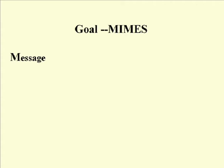The next thing to think about, the I, is intent. What is your intent? What are you intended to do? This can mean who it's intended for — the target — or it can also mean what you intend to accomplish. Do you mean to persuade, convince, inform? There are a number of different things with intent.